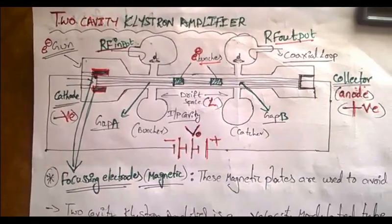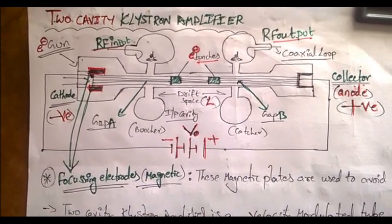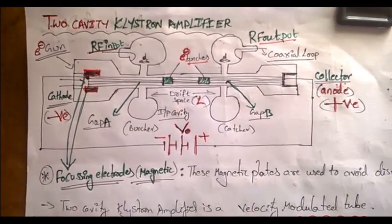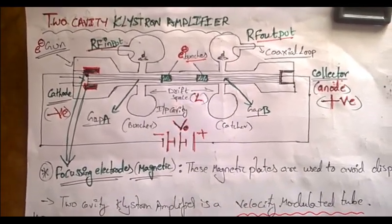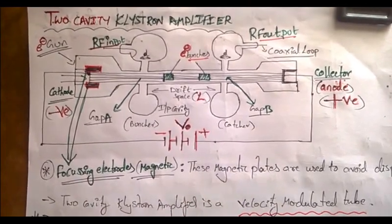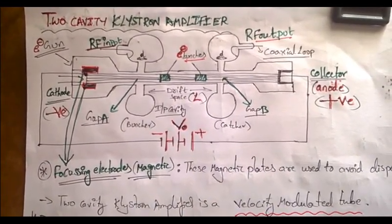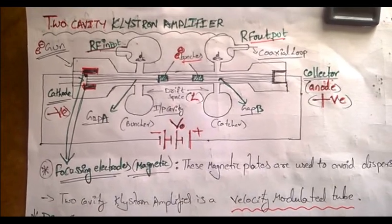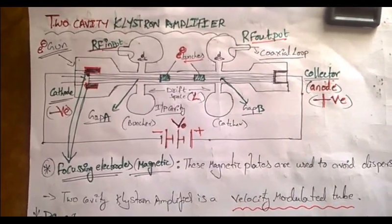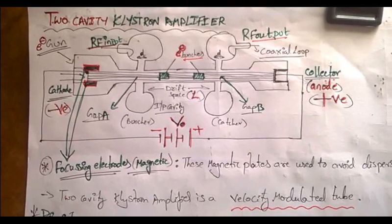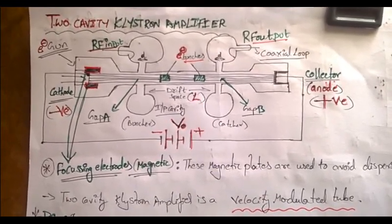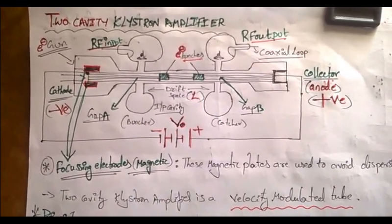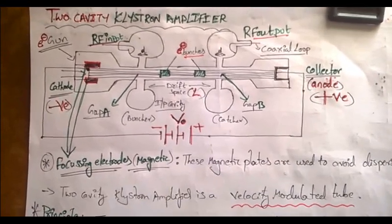For low frequencies, we can use conventional amplifiers. An amplifier strengthens the input signal, since signal strength decreases during transmission. Using conventional amplifiers around kilohertz or megahertz is fine, but when microwave frequencies come into picture — these are millimeter waves of very high frequency — giving such high frequencies to a conventional amplifier input causes the circuit to burn.